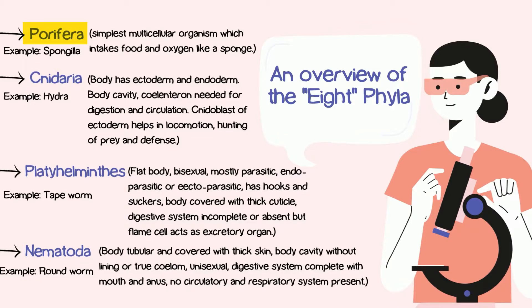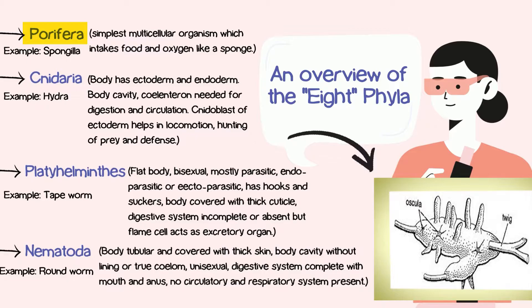Let's start with Porifera. We have seen Porifera in the example of sponges — the name is Spongula. The most organisms of Porifera are very simple, meaning they function very simply and the body structure is very simple. These are simple multicellular organisms which intake food and oxygen like a sponge. When a sponge is placed in water, it will absorb the water along with nutrients.